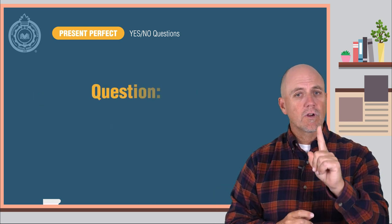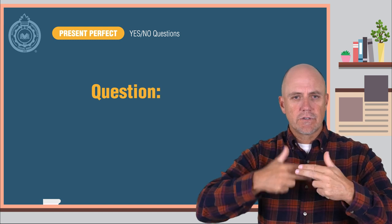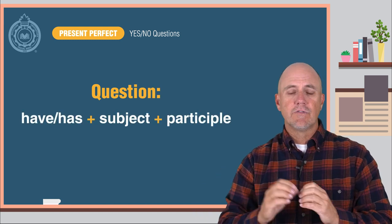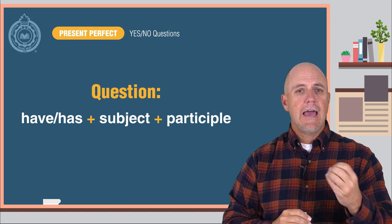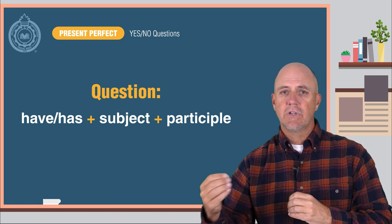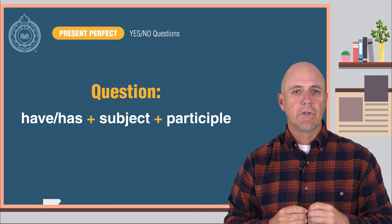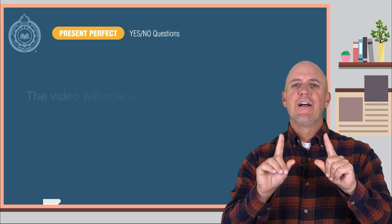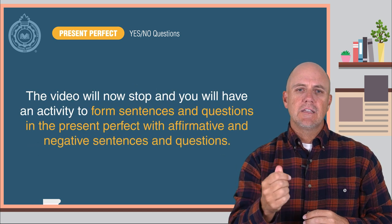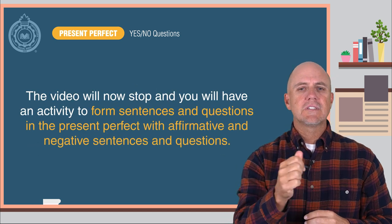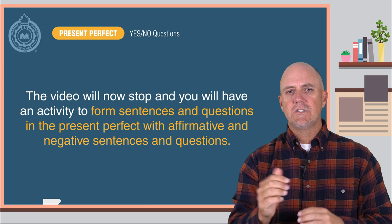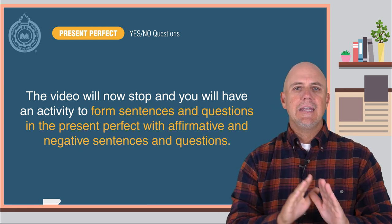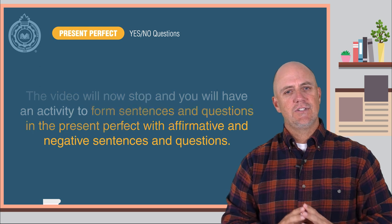For a question, you invert the subject and have or has. Here is the formula: have or has, plus the subject, plus the participle. For example: 'Have you studied English before?' The video will now stop and you will have an activity to form sentences and questions in the present perfect with affirmative and negative sentences and questions.